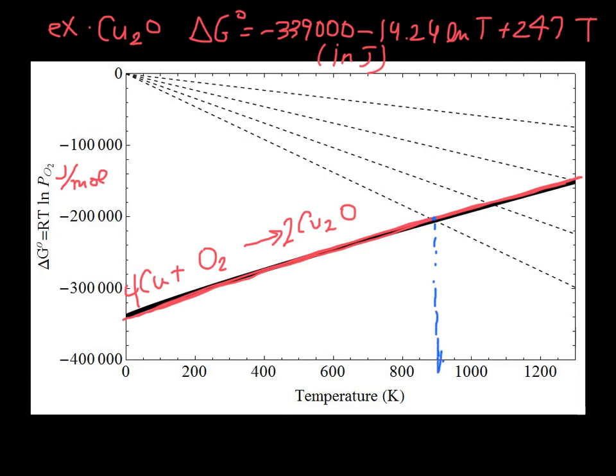let's say that we're looking at a temperature of 900 K, what the equilibrium PO₂ is, because that's where the ΔG curve intersects this particular value of PO₂.